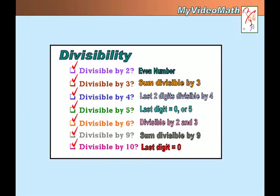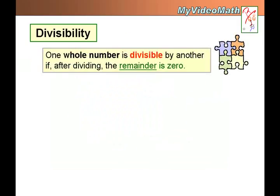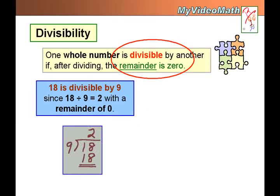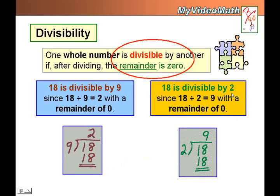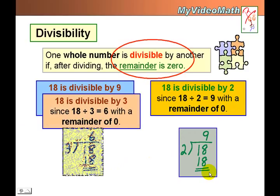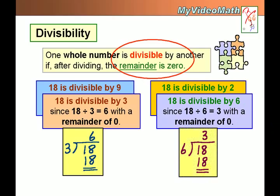Divisibility. In this lesson we want to learn some rules of the divisibility of some numbers. One whole number is divisible by another number when after dividing the remainder is 0. For instance, 18 is divisible by 9 since 18 divided by 9 the remainder is 0. 18 is also divisible by 2, by 3, and by 6 as well.